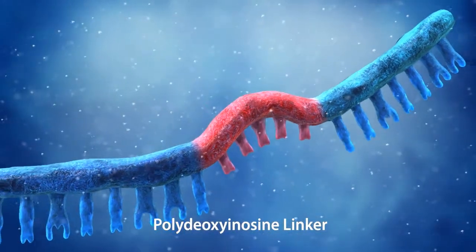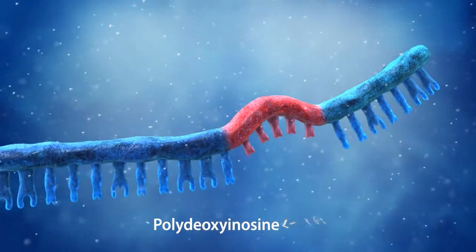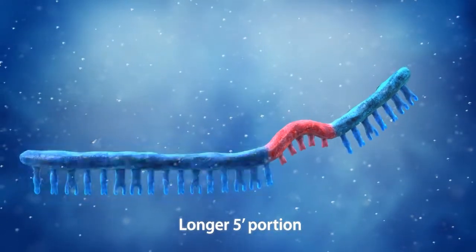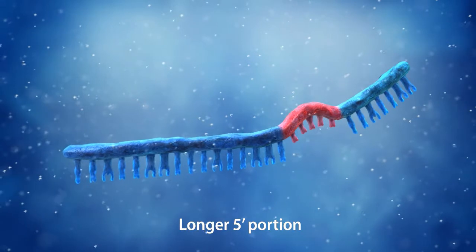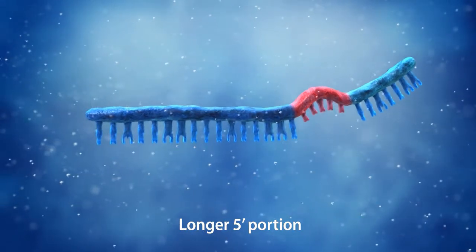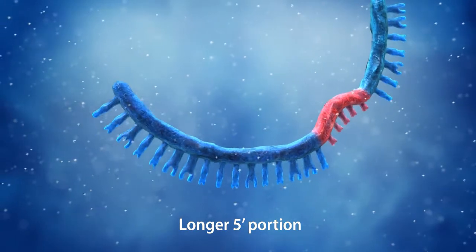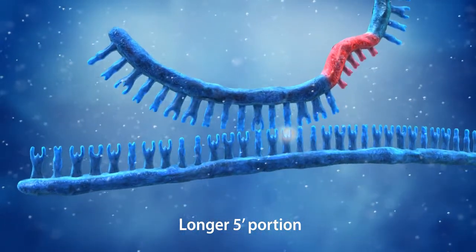Because the sequence of the five prime portion is approximately two times longer than the three prime portion, the five prime portion has a higher TM and will preferentially bind to the template DNA first during PCR. The five prime portion works as a stabilizer, initiating stable binding of the DPO primer.